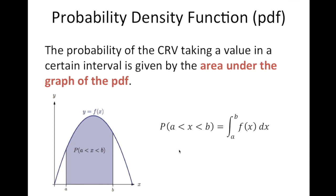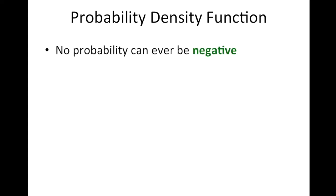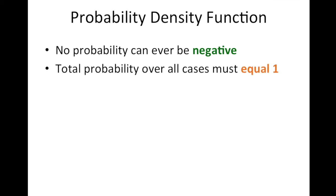It follows that if we try to get the probability of X equal to a certain exact value, that probability is going to be equal to zero. No probability can ever be negative — that is a basic concept of probability — and we know that the total probability over all cases must be equal to one.